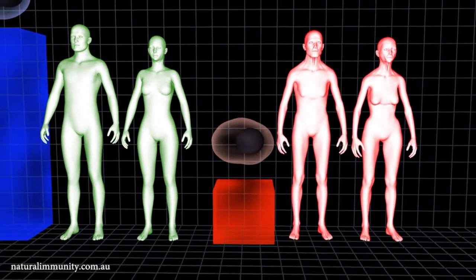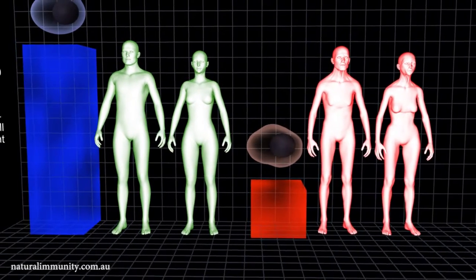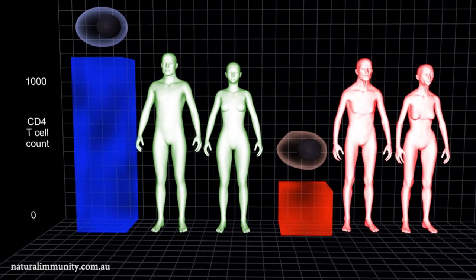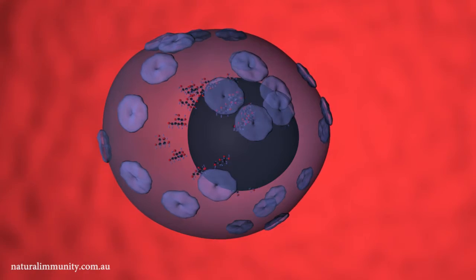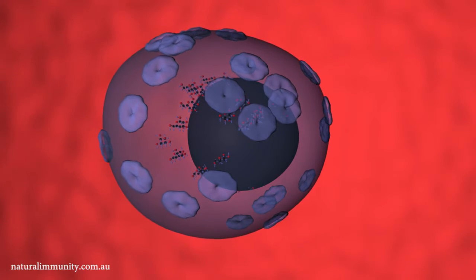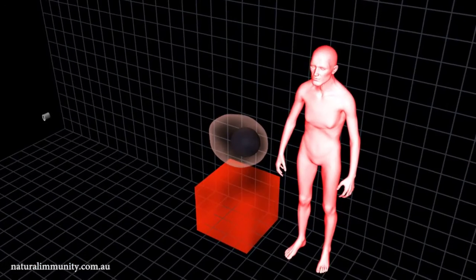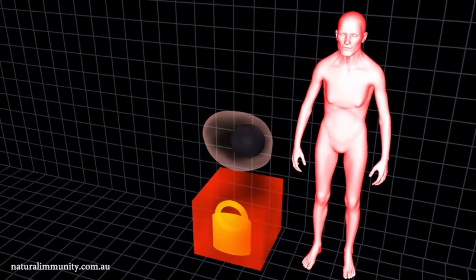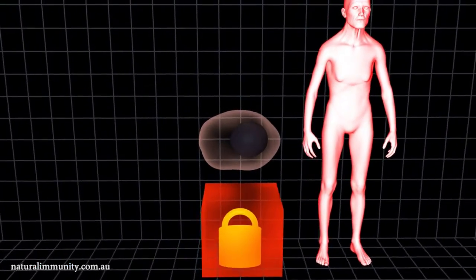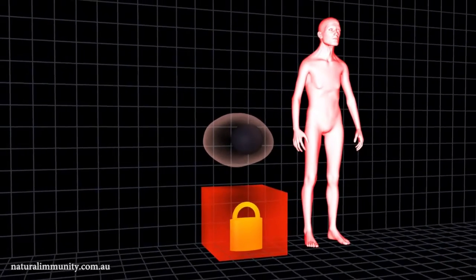well below the normal range despite being on ART and having undetectable viral load. The team showed that glycolysis remains elevated in CD4 T-Cells from these persons and that this could explain why they are unable to reconstitute their normal CD4 T-Cell levels.